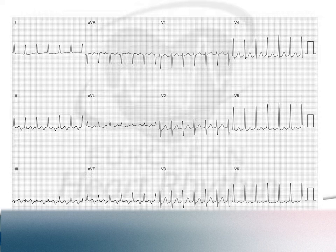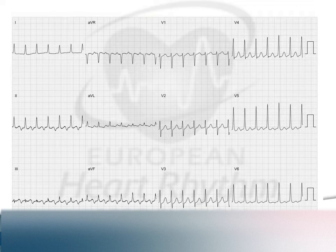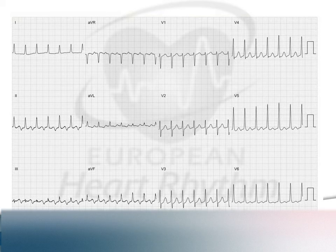Looking at this ECG, I'd like your thoughts on the underlying diagnosis. The P wave is merging into the previous T wave and is probably inverted — this could be focal atrial tachycardia coming from the mouth of the coronary sinus going inferior to superior, atypical AVNRT, or a slowly conducting accessory pathway such as PJRT. All of those are possible for this ECG, so we need EP lab manoeuvres to differentiate.